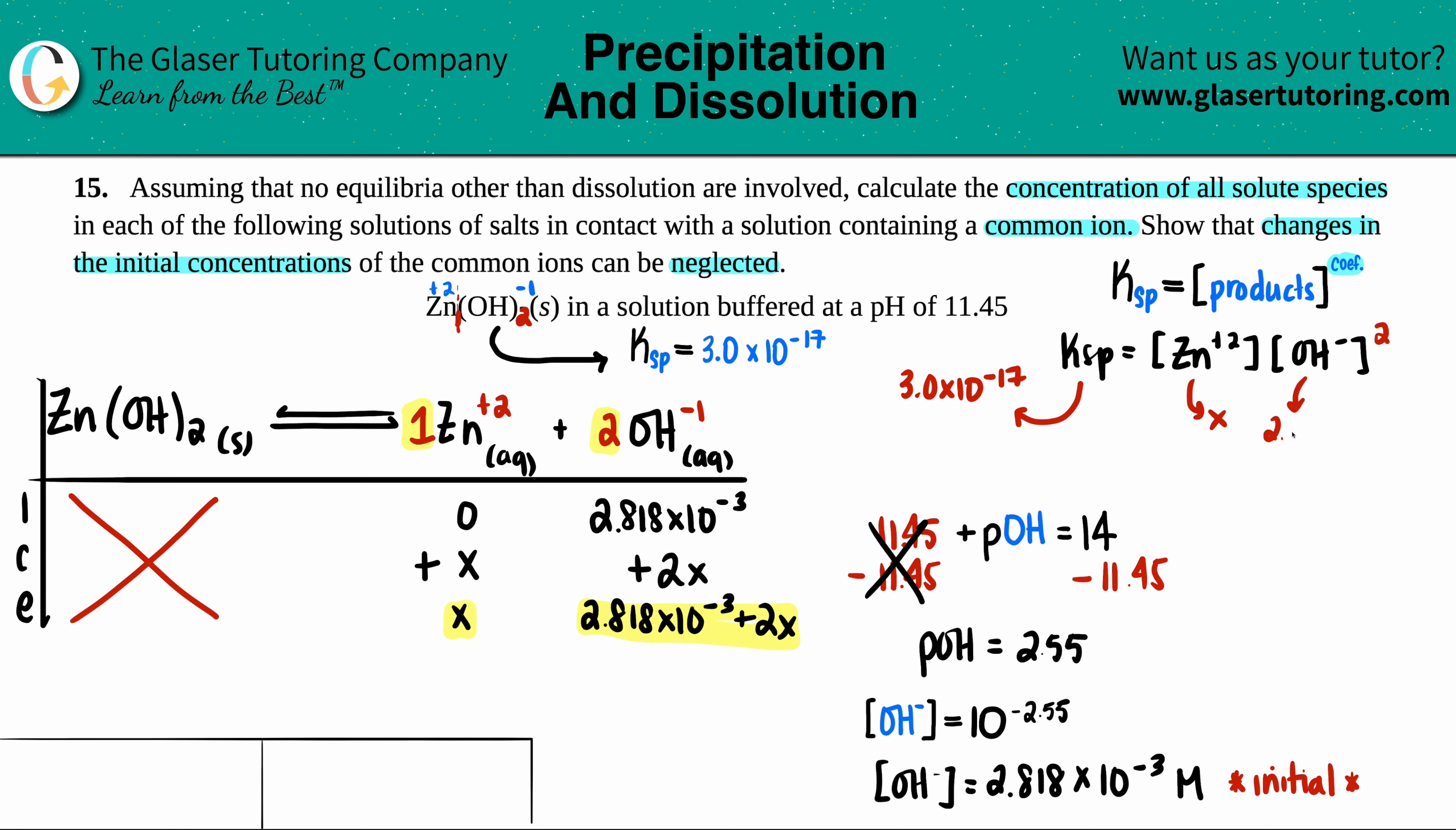These are now going to be the concentration values that we use for our Ksp. So the zinc is going to be X. And the OH is going to be 2.818 times 10 to the negative 3rd plus 2X. However, if we leave the plus 2X in there, that change, we're going to have to do the quadratic. And we try to not do that as much as we can. So we try to assume in the beginning. And the assumption is that this starting value is going to be way larger than the change that we're going to have because the Ksp is so small. So I can neglect this plus 2X.